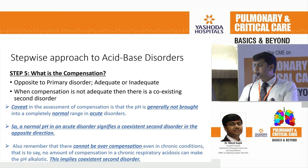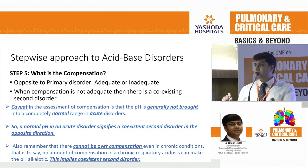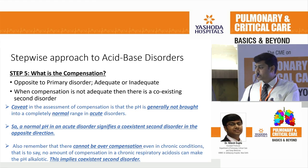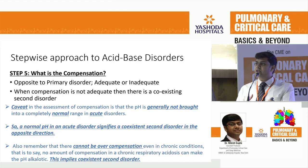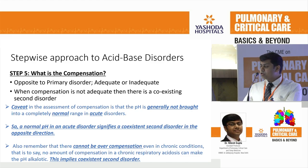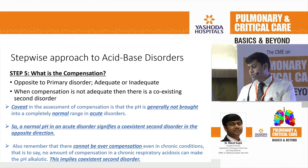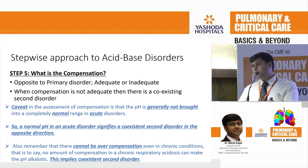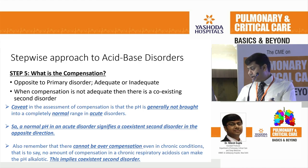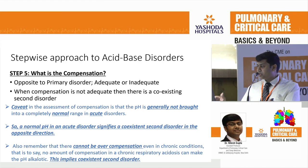A caveat in the assessment of compensation is that pH is generally not brought to normal range in acute disorders. So if a patient has a short history and the pH is normal, that means compensation is overacting and there is a second disorder present. A normal pH in an acute disorder signifies a co-existent second disorder working in the opposite direction. Also remember there will never be overcompensation even in chronic conditions — no amount of compensation in chronic respiratory acidosis can make pH alkalotic. If it is alkalotic in a patient with a CO2 disorder, there is a second disorder.